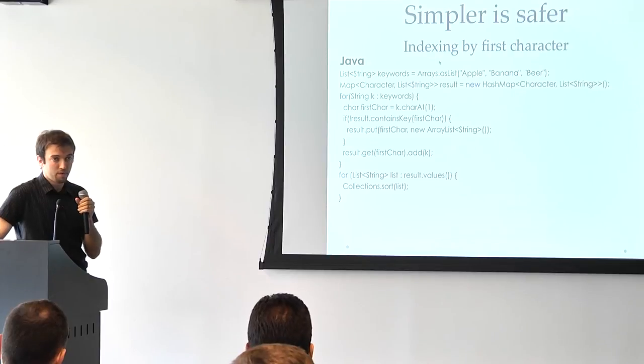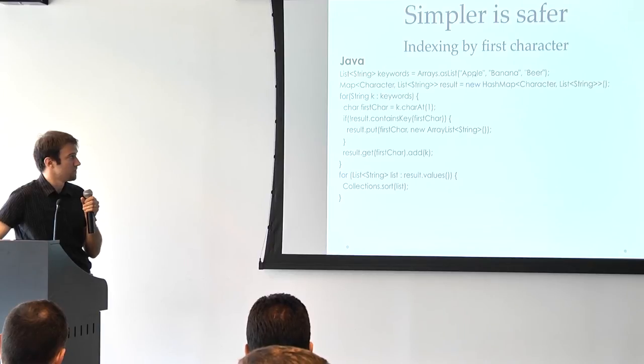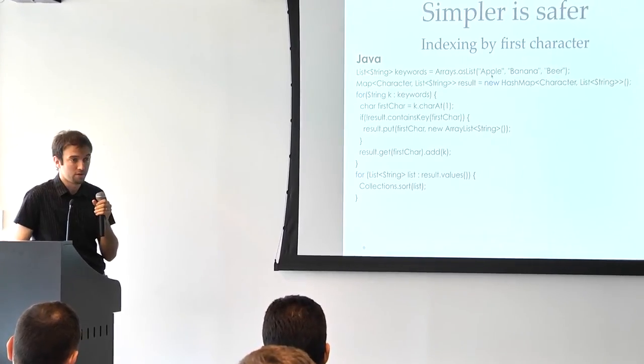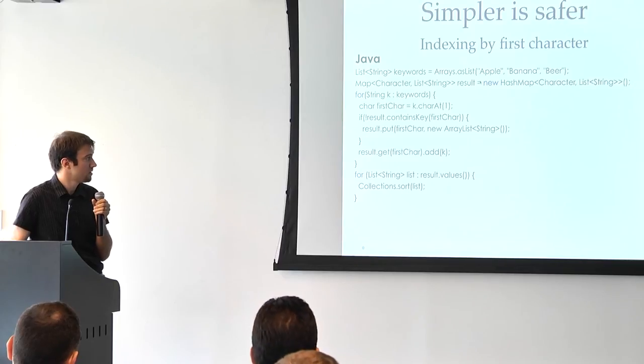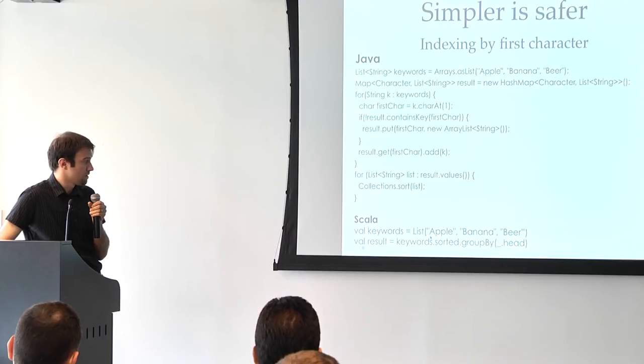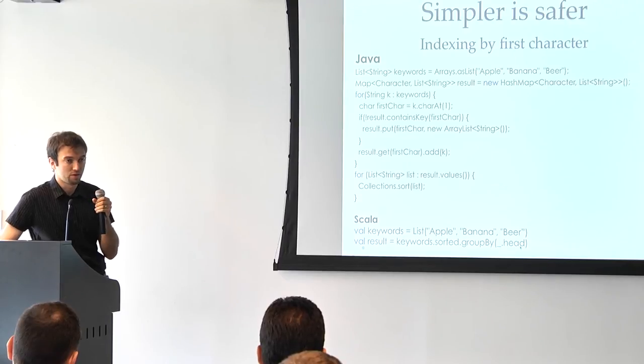Here's an example of we want to index these few members of an array according to the first character. And also sorted according to the first character. This is the Java code to do this, and also it has a bug. And this is the equivalent Scala code. Basically we say that we take the keywords, sort them, group by the first character. This example also emphasizes the fact that a string is a collection, which means that it has all the collection methods, including head, which retrieves the first character.